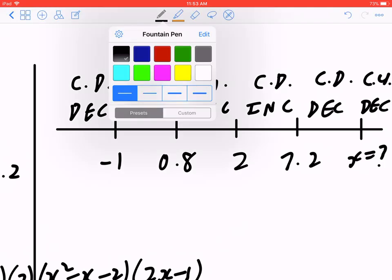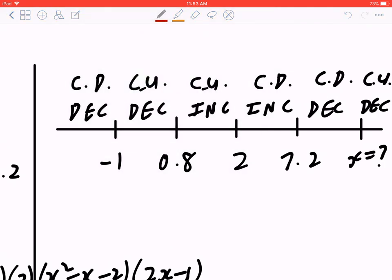So again, when you combine them, it's concave down decreasing, concave up decreasing, concave up increasing, concave down increasing, concave down decreasing, and concave up decreasing.